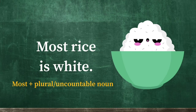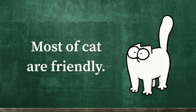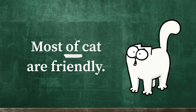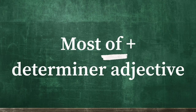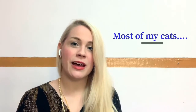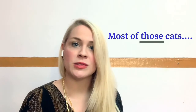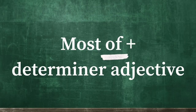Now look at the original sentence: 'Most of cat are friendly.' I want to give you a general rule with 'most of'. If you use 'most of', you must also have a determiner adjective before the noun. For example: 'Most of the cats.' 'Most of my cats.' 'Most of those cats.' You must have that determiner adjective if you include 'of'.